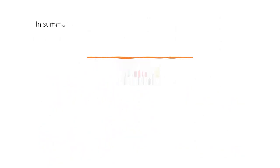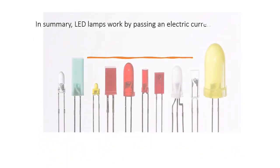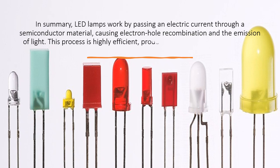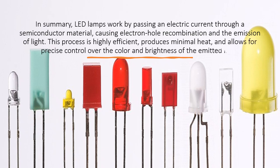In summary, LED lamps work by passing an electric current through a semiconductor material, causing electron-hole recombination and the emission of light. This process is highly efficient, produces minimal heat, and allows for precise control over the color and brightness of the emitted light.